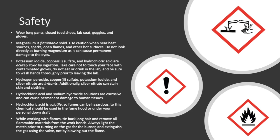Safety in lab today is pretty important because you're dealing with a lot of chemicals across a variety of experiments. Magnesium is a flammable solid and you're going to burn it, but when you burn it make sure you don't look at it directly — it burns very bright and can cause permanent damage to your eyes. Potassium iodide, copper(II) sulfate, and hydrochloric acid are acutely toxic by ingestion, so be careful not to touch your face with contaminated gloves or eat or drink in the lab. Hydrogen peroxide, copper(II) sulfate, potassium iodide, and silver nitrate are irritants, and silver nitrate can stain your skin and clothing, so be especially aware of that.